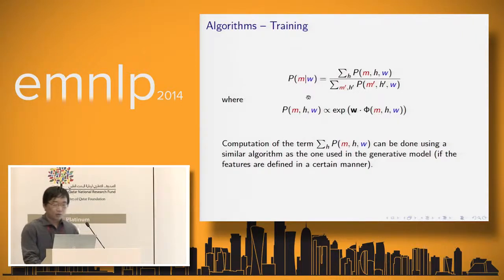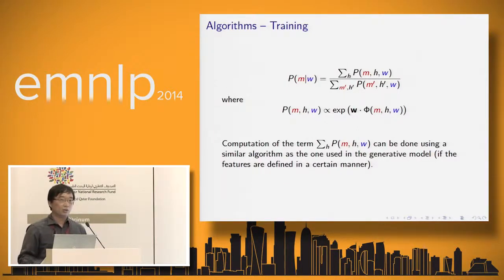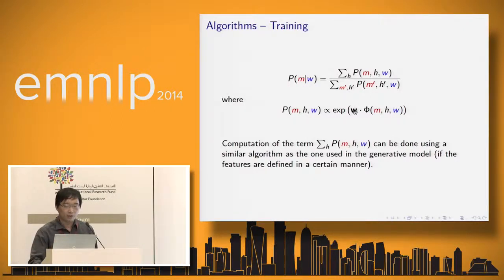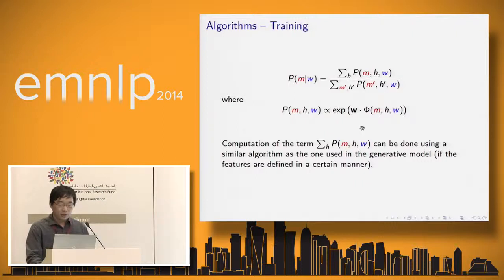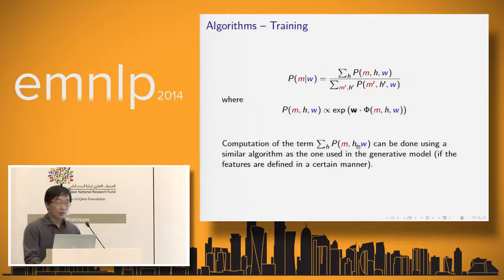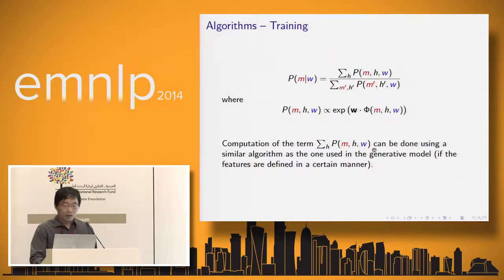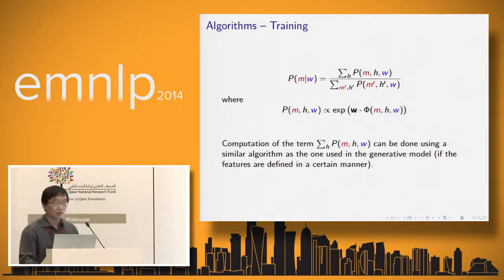The standard procedure is to use gradient-based methods: we compute the objective function, take the gradient with respect to model parameters W, then use gradient descent or L-BFGS to optimize. The objective function consists of two terms. The numerator is a summation of several terms that can be computed using an algorithm similar to the one used for the generative model, provided features are defined in a certain way.